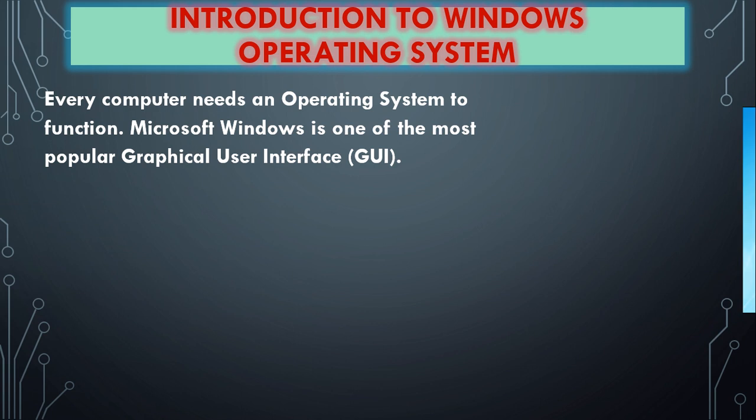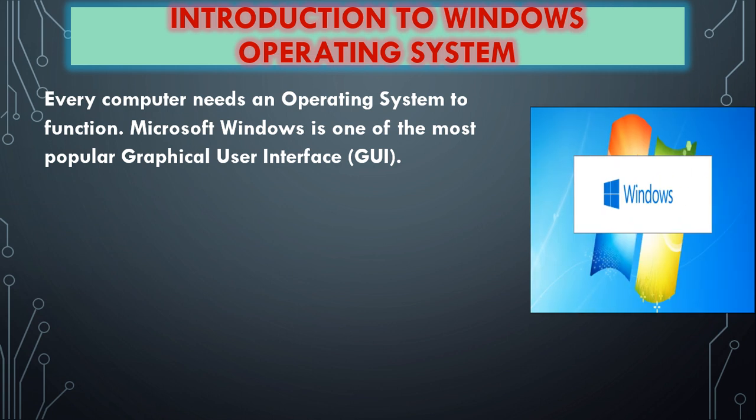Every computer needs an operating system to function. Microsoft Windows is one of the most popular graphical user interface operating systems. Without an operating system, any computer cannot perform. So everything needs an operating system. We have an operating system in mobile too, and the operating system controls the entire activity.